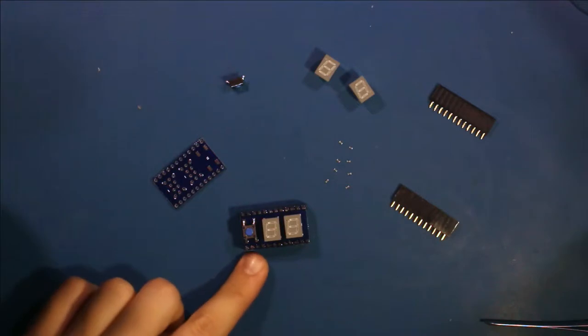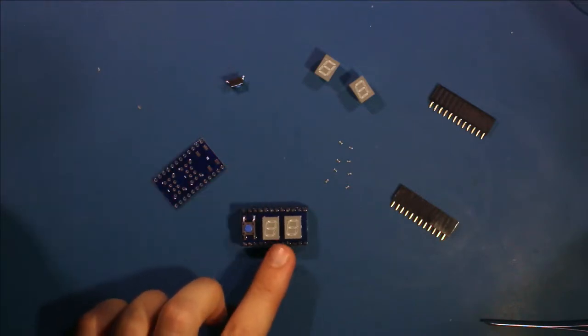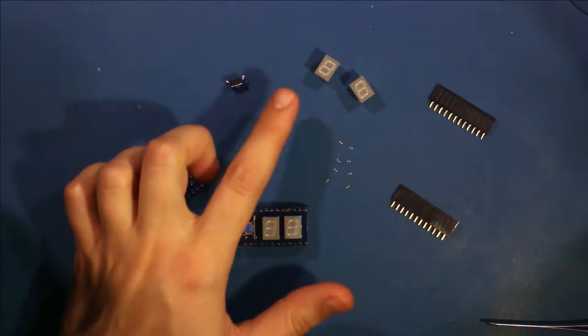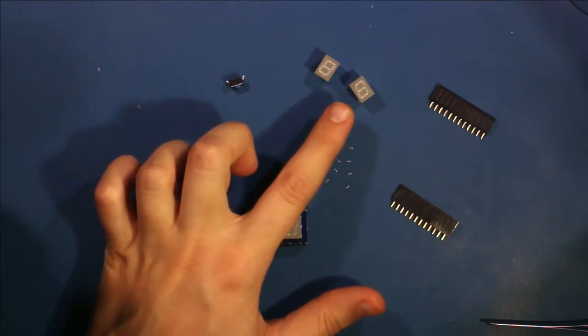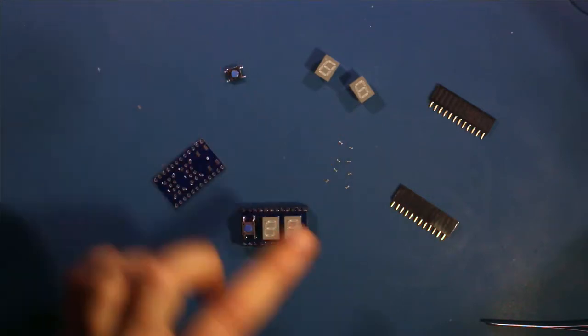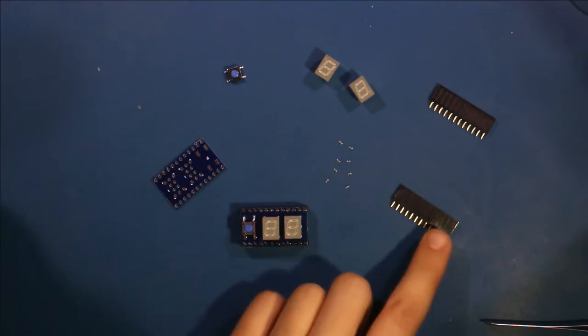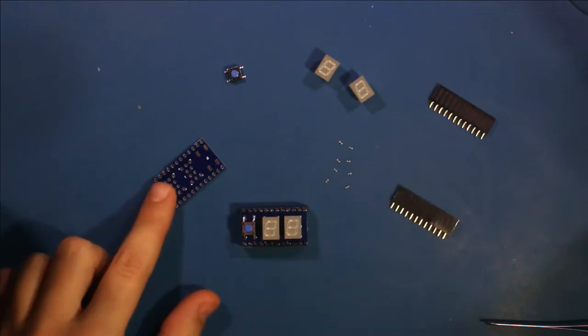And basically what this dice pair uses is two LED seven segment displays, a button, eight resistors, two female headers, and the PCB.